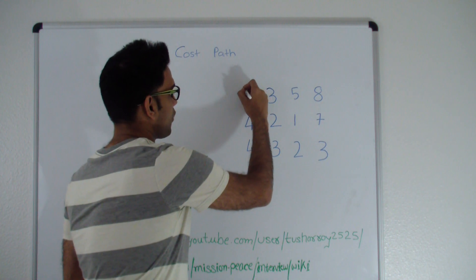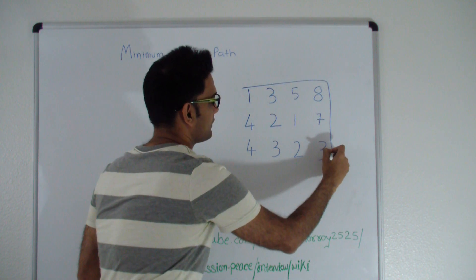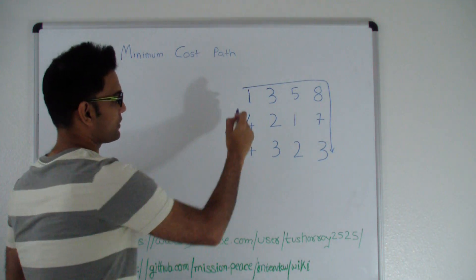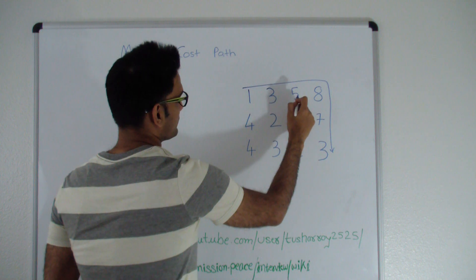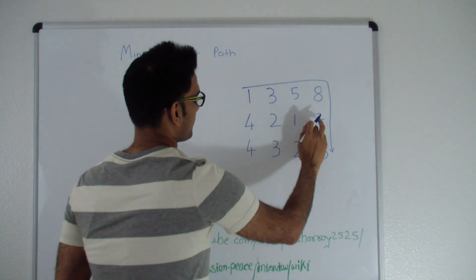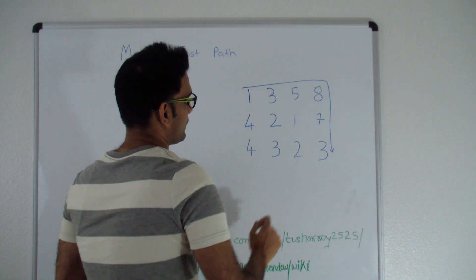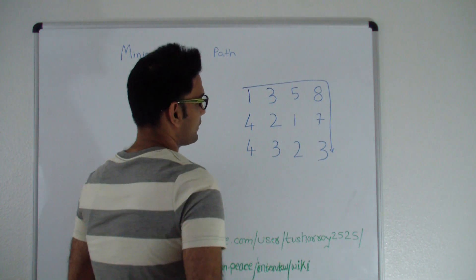Let's see what is the cost to reach if we take this path. If we took this path, the cost to reach from top left to bottom right would be 1 plus 3 is 4, 4 plus 5 is 9, 9 plus 8 is 17, 17 plus 7 is 24, 24 plus 3 is 27.